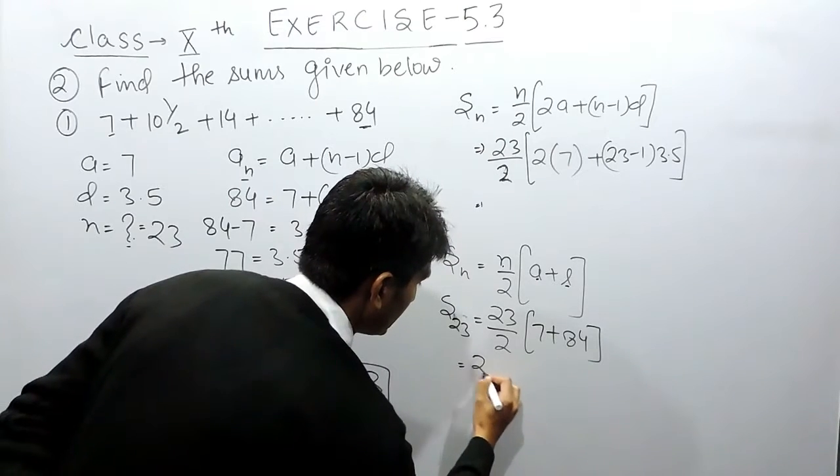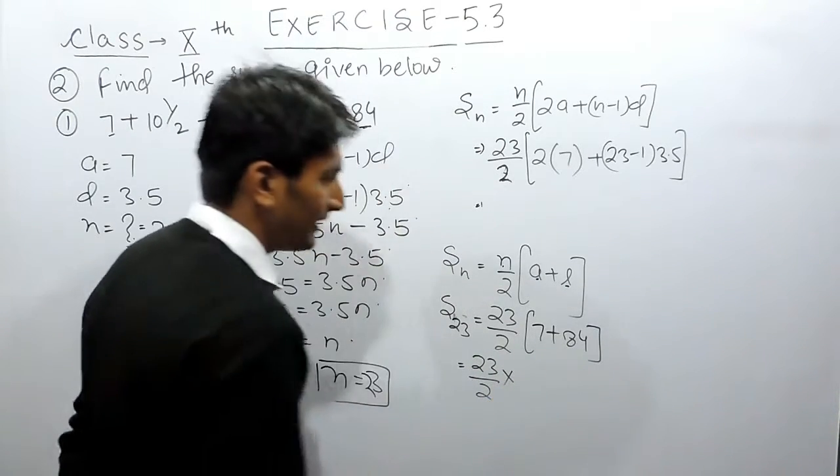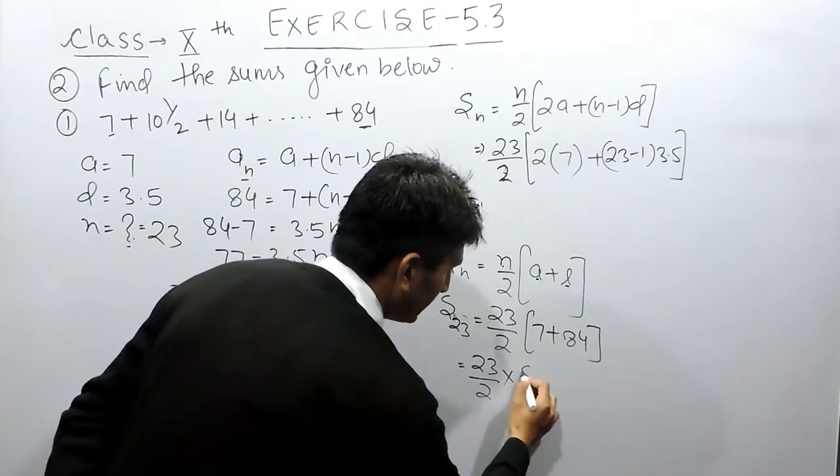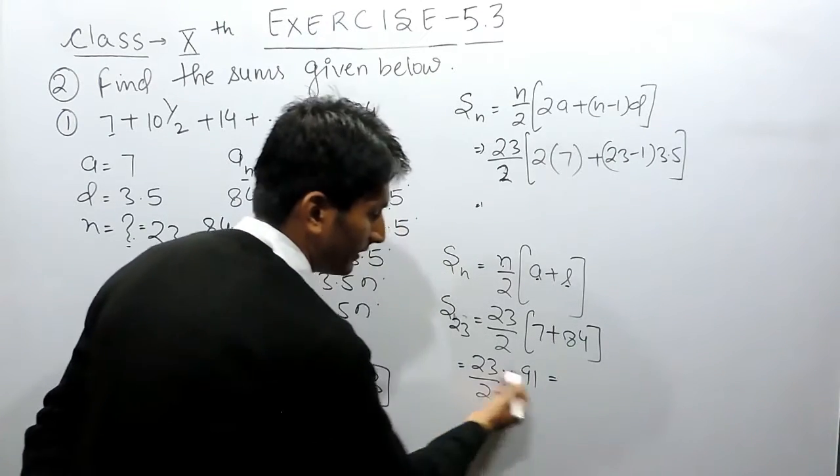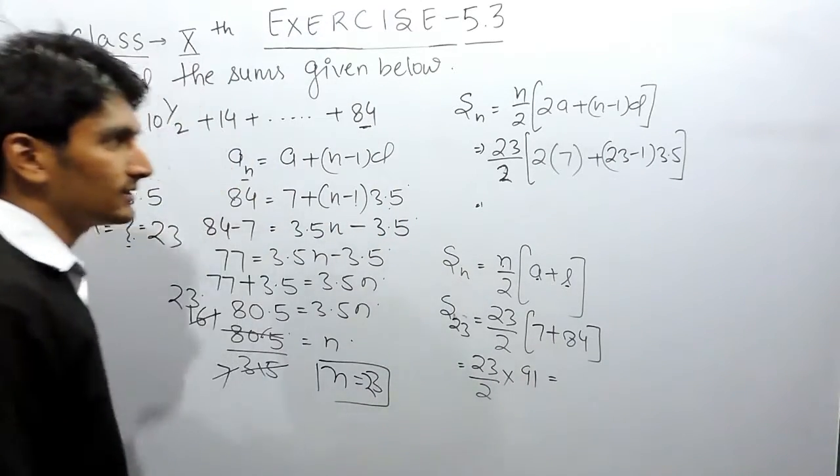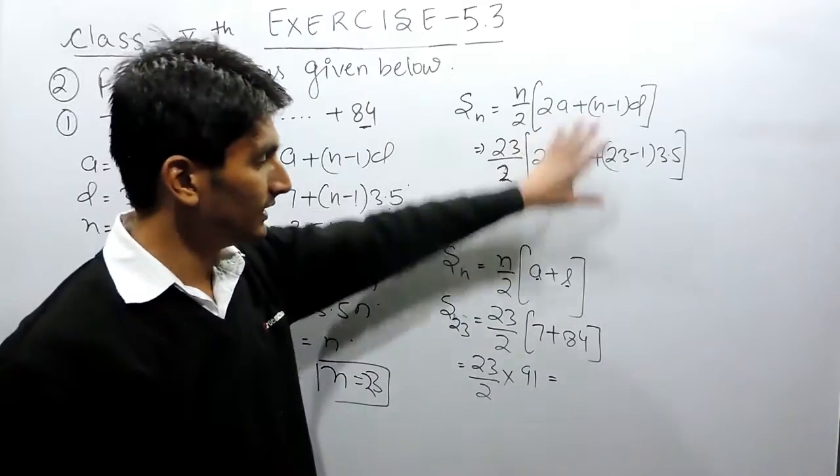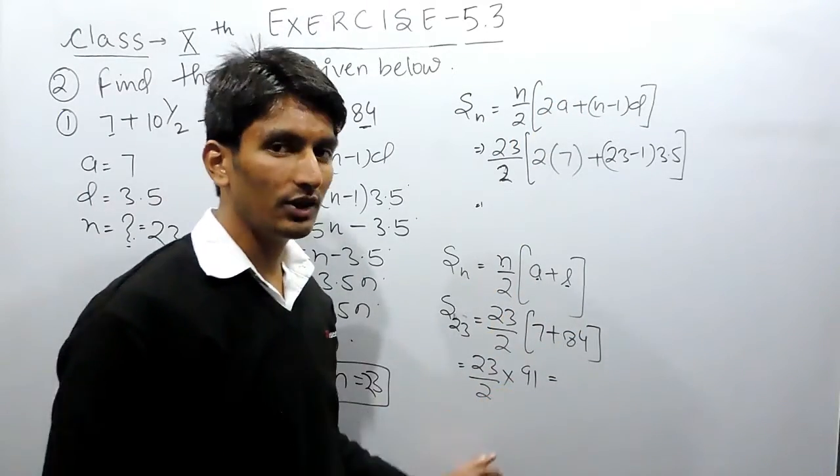This will be 23 multiplied by 2 into 84 plus 7 will be 91. And solving this equation, you will get your answer. Instead of solving this, this will make your calculation shorter.